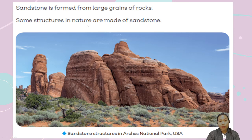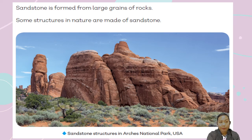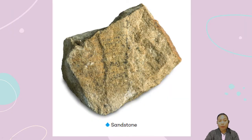Like this one — this is a sandstone structure in Arches National Park in the USA. This is a rock formation — a sandstone. It is a kind of sedimentary rock that has been layered and squeezed together. It has different visible layers. When you touch or pound sandstone, you can get small dust particles that look like sand.